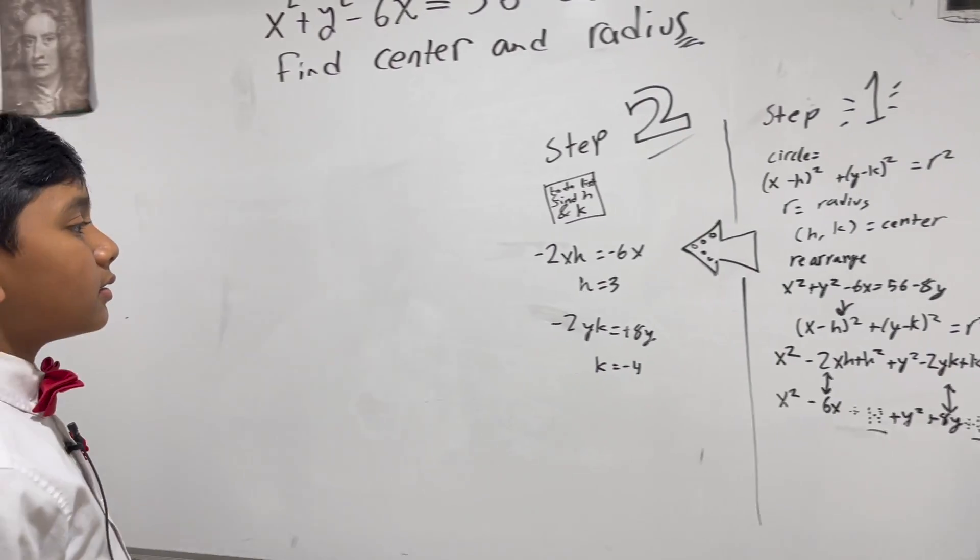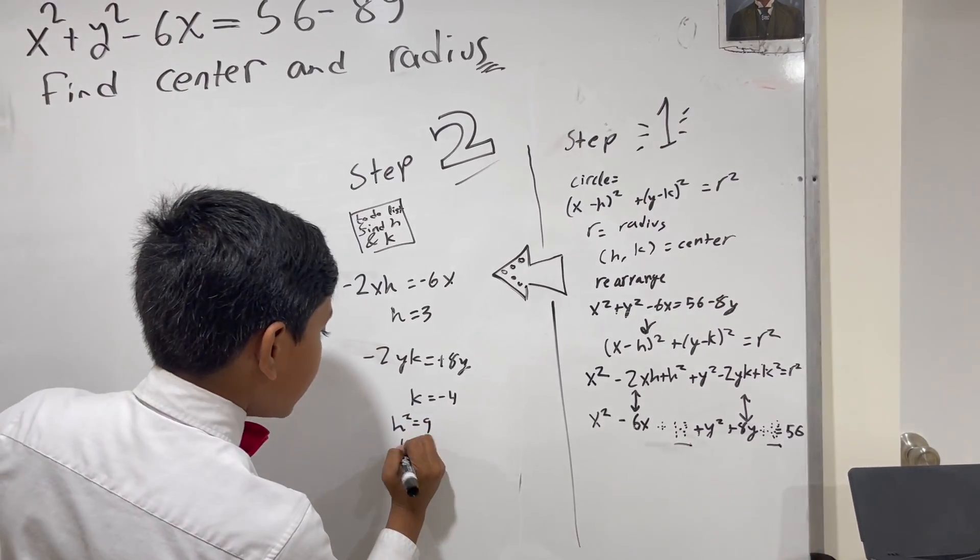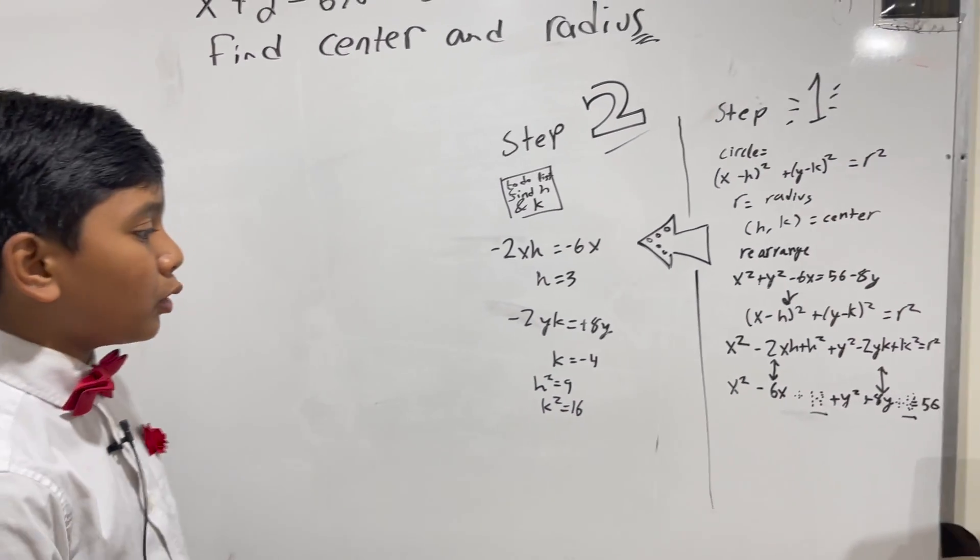All right. So, now, that means that H squared is 9, and K squared is 16. So, we're going to add 9 and 16 to both sides.